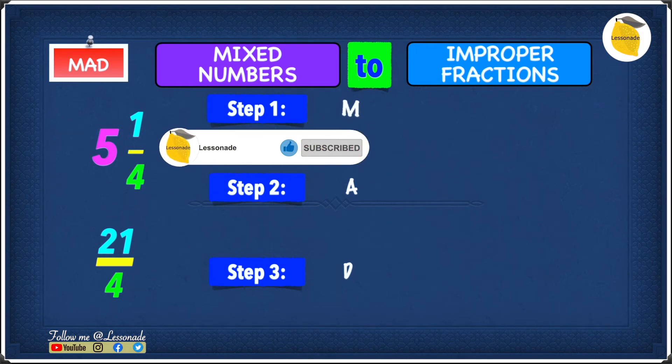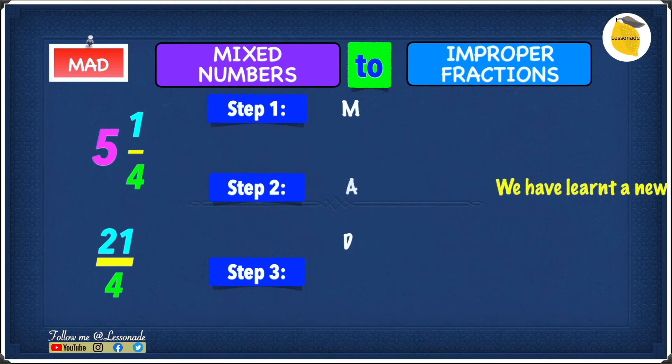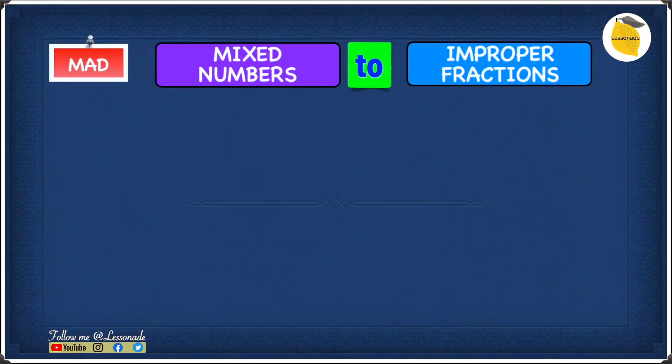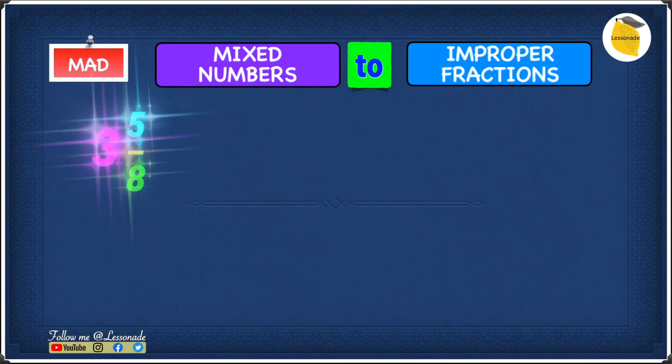I hope you guys understood how to convert mixed numbers into improper fractions using the technique called MAD. Now, let's see how to convert 3 and 5 over 8 into an improper fraction.